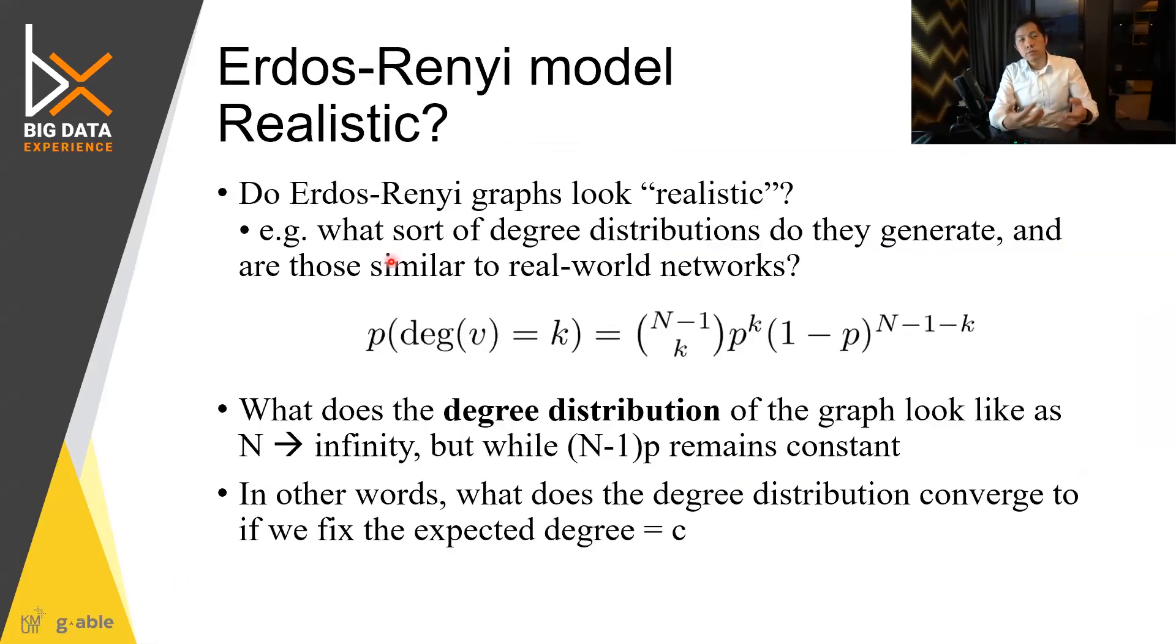So does Erdos-Renyi is this Erdos-Renyi realistic in terms of explaining the behavior of the preferential attachment? When you take a look at the degree distribution, you can see that the probability of degree distribution can be explained by this N choose K and the probability of P turning in. N choose K is like combination.